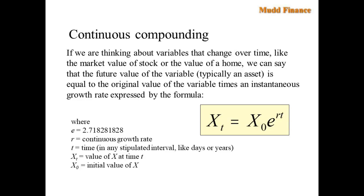Well, let's take a look at some background math to figure out the answer to that. Let's first of all look at the definition of continuous compounding. So we're saying here, if we're thinking about variables that change over time like the market value of the stock or the value of the home, we can say the future value of the variable is equal to the original value of the variable times an instantaneous growth rate expressed by this formula, where E represents Euler's number 2.718 indefinitely.